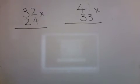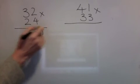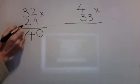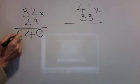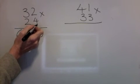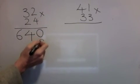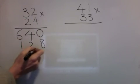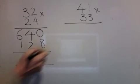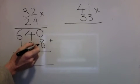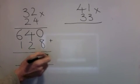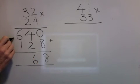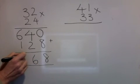Here are the answers. Nought down. Two times two is four. Two times three is six. Over here: four times two is eight. Four times three is twelve. Add them together: nothing at eight is eight. Four add two is six. Six add one is seven.